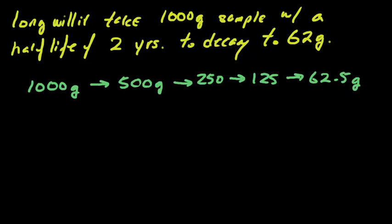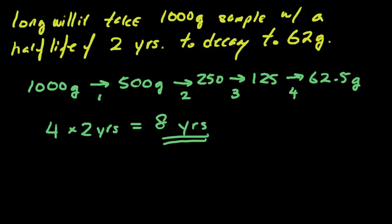And on the MCAT, they're not going to ask you for a very specific decimal answer. So we get to 62.5, we can say, all right, so that's around 62. So we have one, two, three, four half-lives. If each half-life is two years, four half-lives times two years will give us eight years. It'll take eight years for all of this to happen. It'll take eight years for 1,000 grams with a half-life of two years to decay to 62 grams.